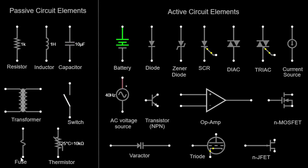A fuse is a protective device used in electrical circuits to prevent damage from excessive current. It consists of a thin wire that melts and breaks the circuit when the current exceeds a certain threshold. Fuses are represented by a squiggly line in circuit diagrams. A thermistor is a type of resistor whose resistance changes with temperature. It is used to measure and control temperature in electronic circuits. Thermistors can be either positive temperature coefficient (PTC) or negative temperature coefficient (NTC) devices.